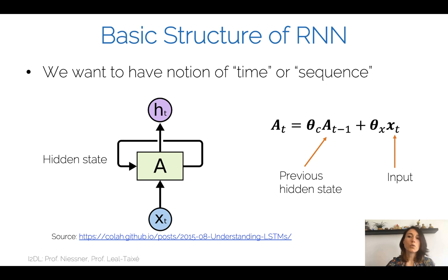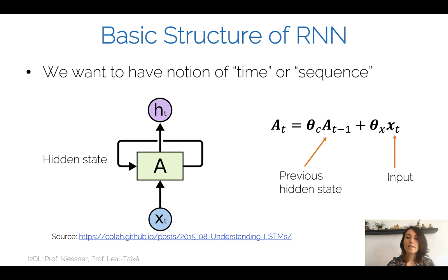We then moved into recurrent neural networks — networks that can process sequences, data points that come one after the other. RNNs capture the notion of time and sequence. We saw the basic structure of an RNN: weights theta_c process the previous hidden state, and weights theta_x process the input. The hidden state at the current time step comes from the combination of the previous hidden state and the input.